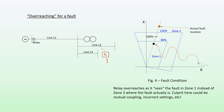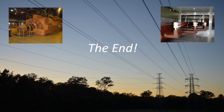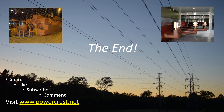I hope this video has explained and made clearer what is meant by a distance relay overreaching for a fault condition as opposed to an overreaching element, and similarly what is meant by a distance relay under-reaching for a fault as opposed to an under-reaching element. Please share, like, and subscribe to my Power Crest channel, leave a comment, and visit my website at www.powercrest.net. Thank you, and till next time.